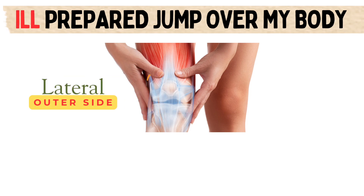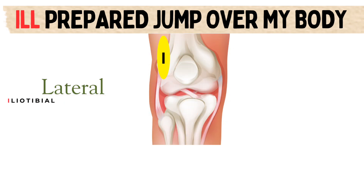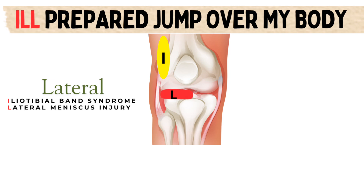The 'ill' part covers lateral or outer knee pain. The letter I stands for iliotibial band syndrome or ITBS, causing pain predominantly at the site of iliotibial band attachment at the knee. Letter L represents lateral meniscus injury with pain along the outer knee joint line. The second letter L stands for LCL or lateral collateral ligament injury with pain and swelling on the lateral or posterolateral side of the knee.